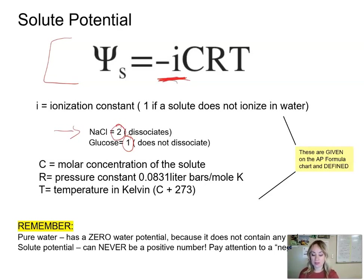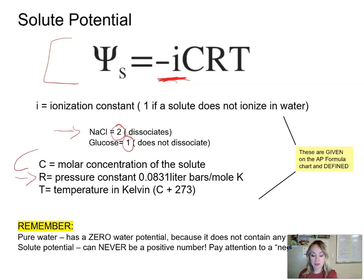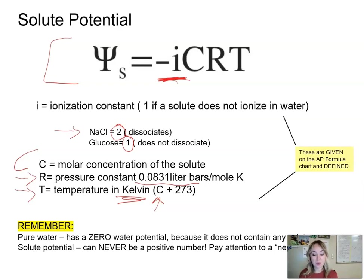Another component is the molar concentration of the solute. Then we have R, the pressure constant — this number is given to you. And then temperature, which must be in Kelvin, so if given in Celsius you need to do the conversion. Multiply all these values and you get your solute potential. Notice it will always be a negative number — solute potential will never be positive.